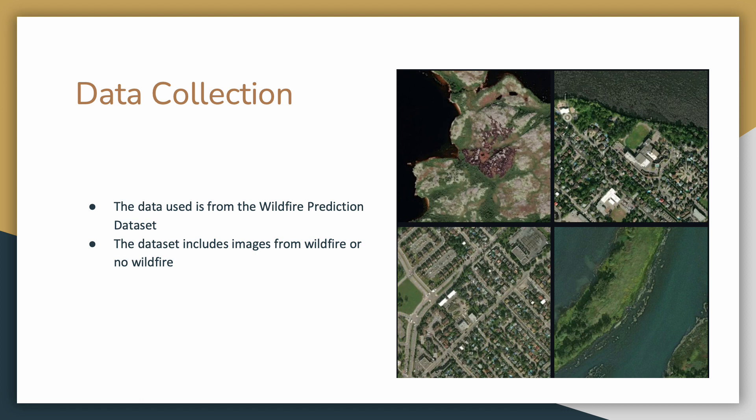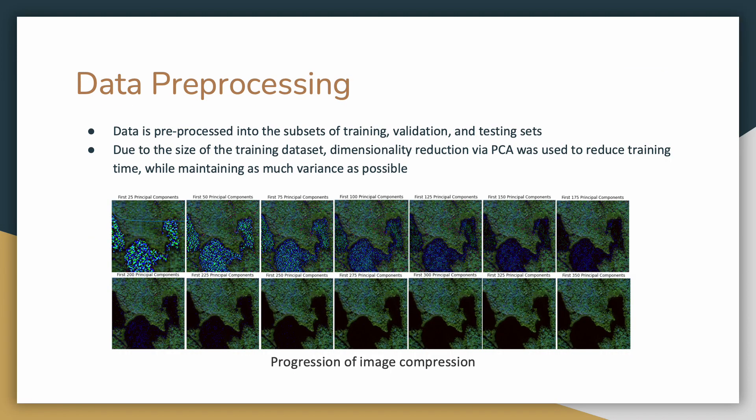We downloaded over 40,000 aerial images from the Canadian Forest Inventory Department falling almost evenly into two classes: wildfire and no wildfire. Images were already separated into training, validation, and testing folders.